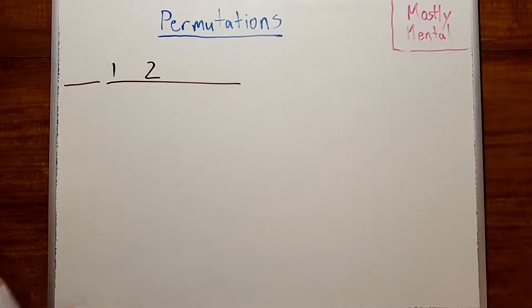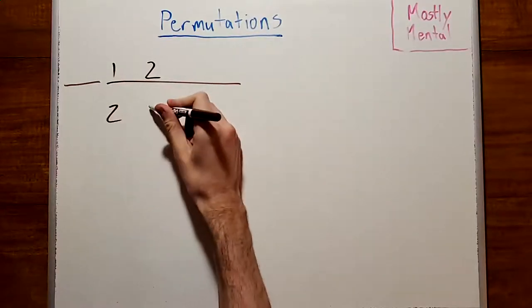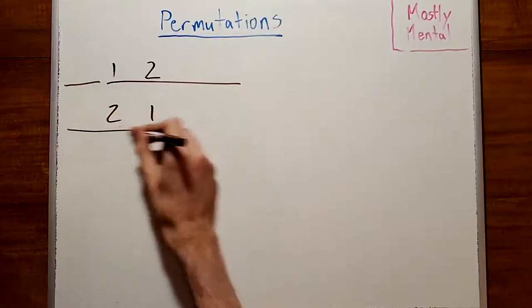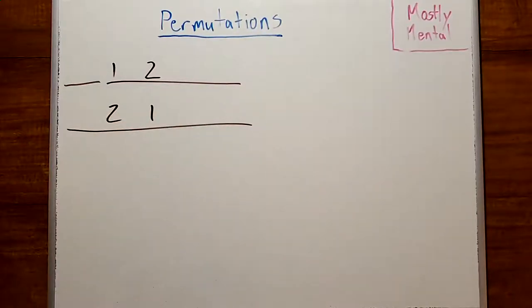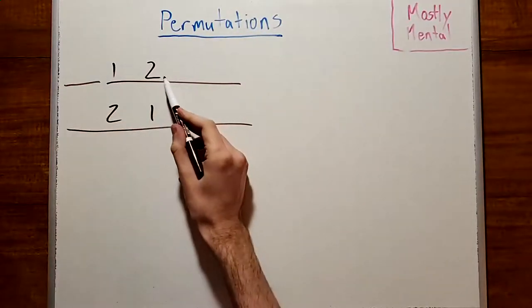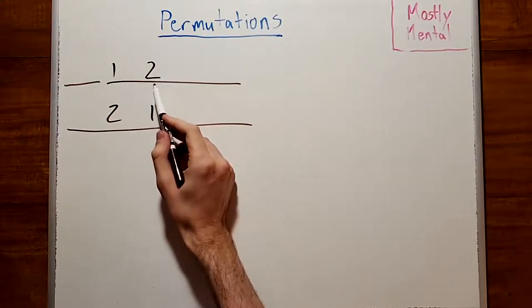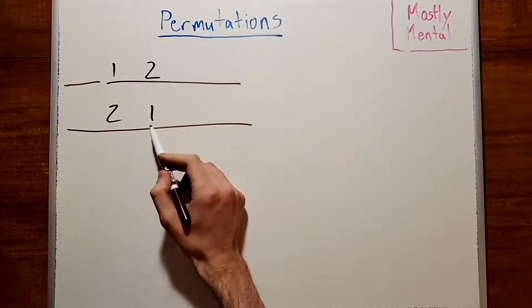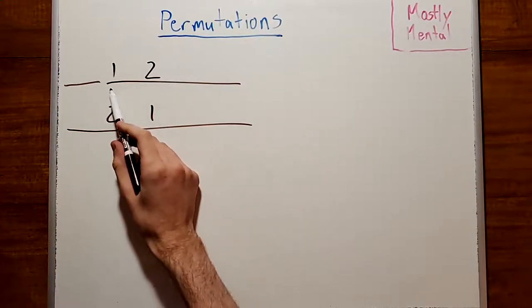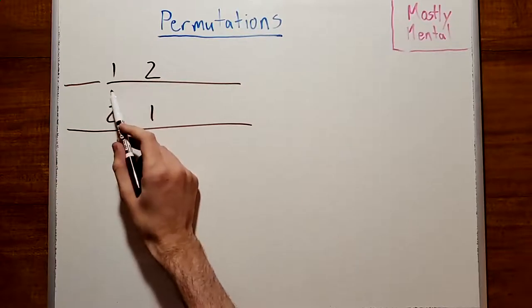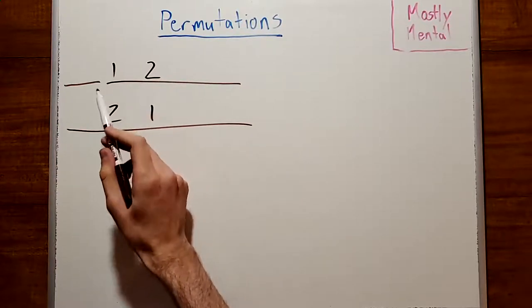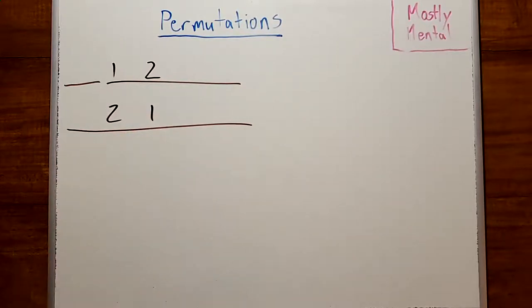For any given order, there's another order where we swap the 1 and the 2. And so there must be equally many permutations where the 1 comes before the 2, as there are where the 2 comes before the 1. And so that means there's a 50% chance that the 2 comes after the 1 and is thus in the same cycle as the 1.